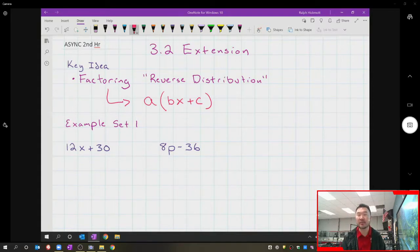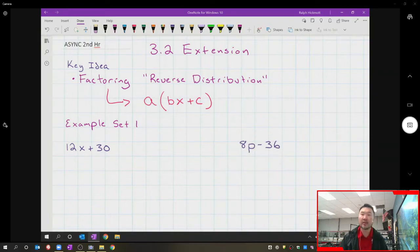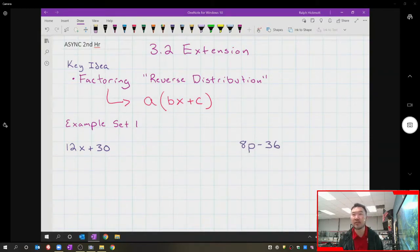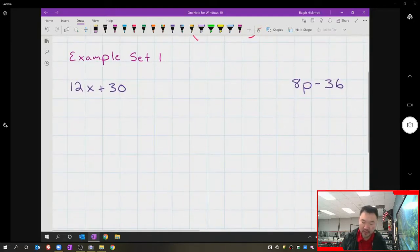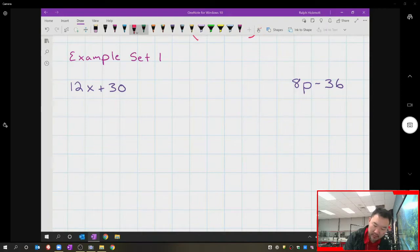Let's go ahead and check this out using two examples. These are the two examples I want you to put into your notes. This video is pretty short, so the big thing is to go back and review if any of this is confusing. Let's look at Example Set 1: 12x + 30 and 8p - 36. The first thing you want to do is think of...